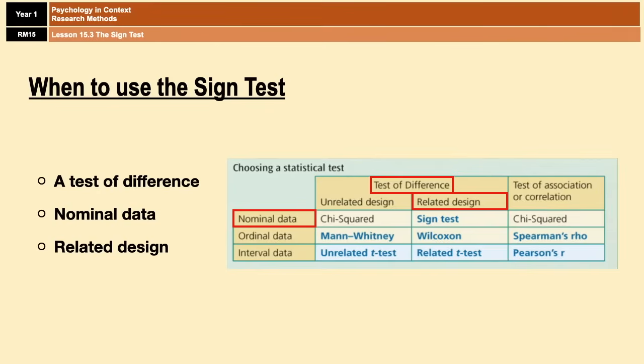The sign test is used under the following conditions: when we're doing a test of difference rather than a correlation, when we're using nominal data which is categorical data, and finally when we are using a related design. A related design means that we either have a repeated measures or a matched pairs design in our experiment.